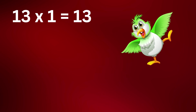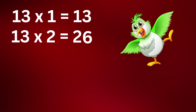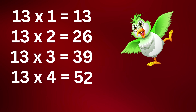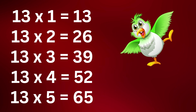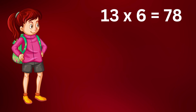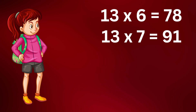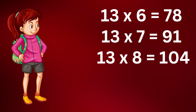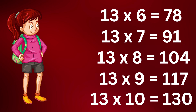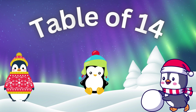Let's repeat with me: 13 1's are 13, 13 2's are 26, 13 3's are 39, 13 4's are 52, thirteen fives are sixty-five, thirteen sixes are seventy-eight, thirteen sevens are ninety-one, thirteen eights are one hundred four, thirteen nines are one hundred seventeen, thirteen tens are one hundred thirty.